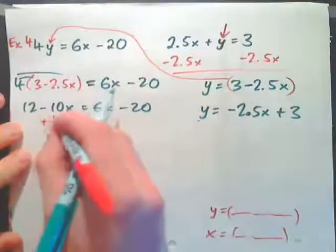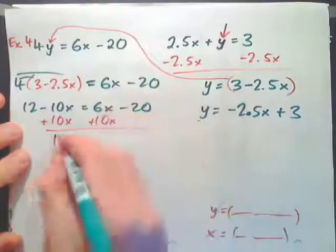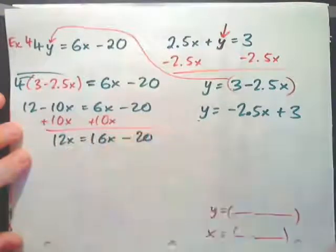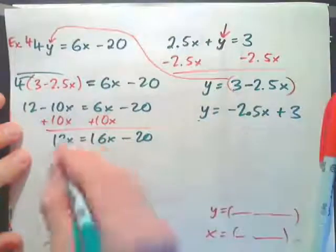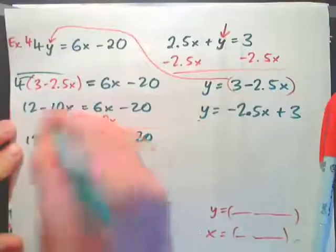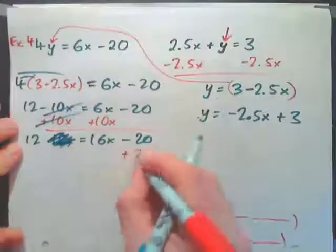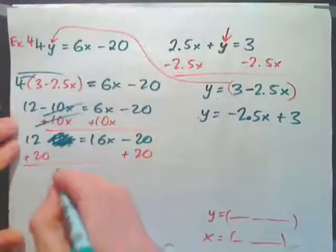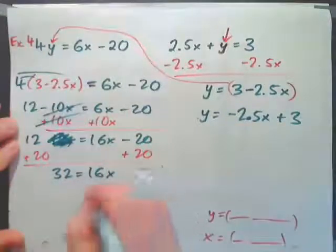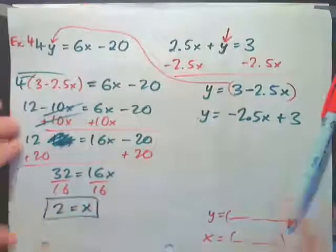At this point, add 10x to both sides to keep a positive x value. We get 12 equals 16x minus 20. Add 20 to both sides: 32 equals 16x. Divide both sides by 16 and we have x equals 2.